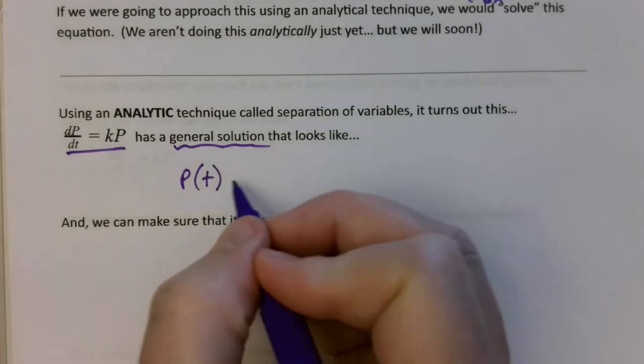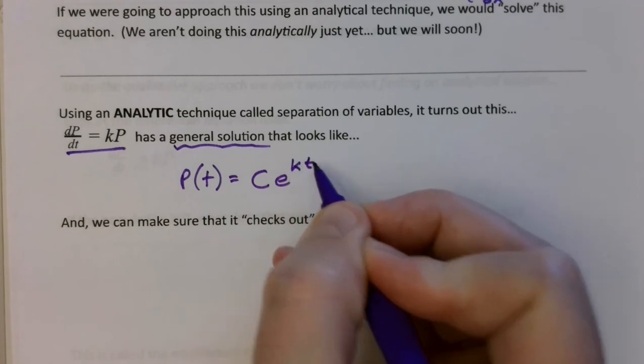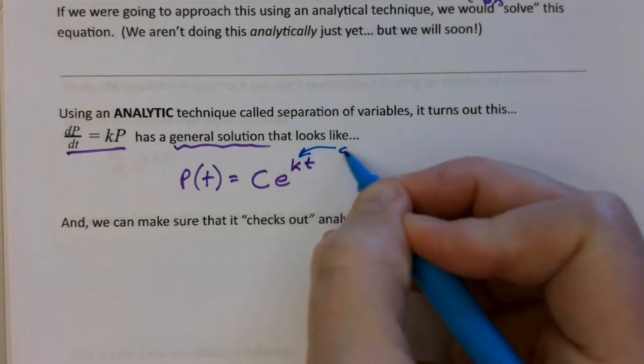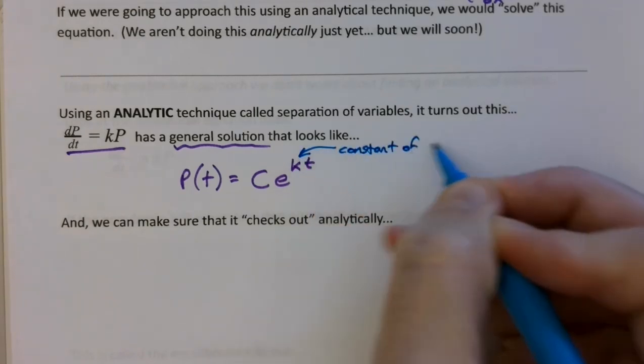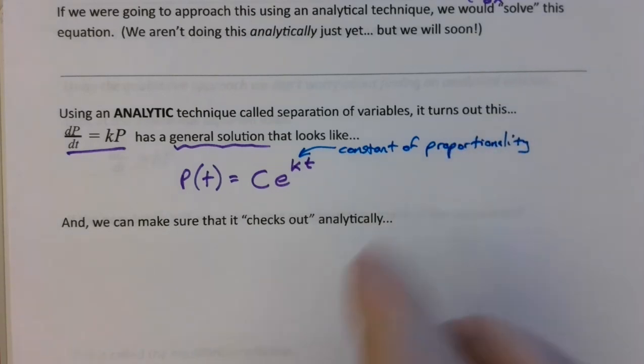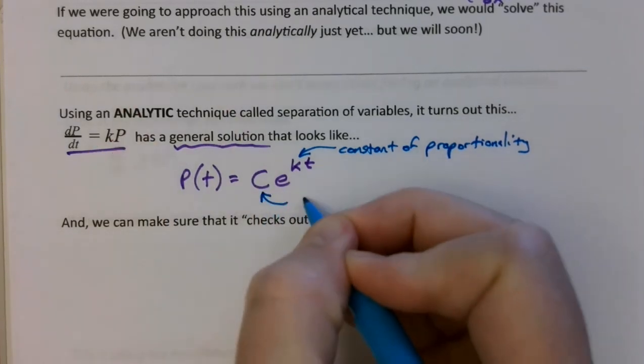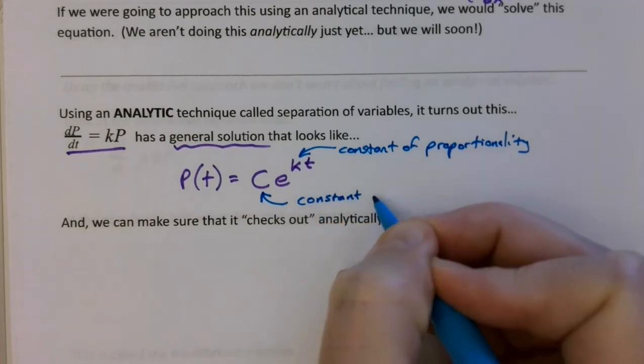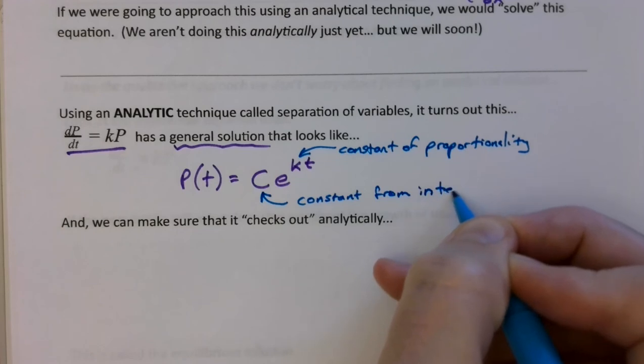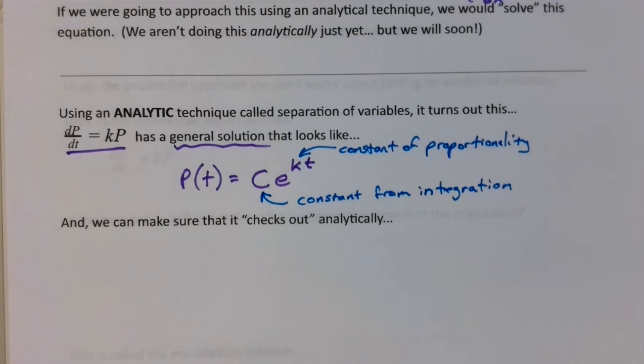P of t equals some constant times e to the power of k times t. Now if you're paying attention, you recognize that that k, that was really our constant of proportionality. And that's from the original equation. That's sitting right there. But this C right here, this is another constant, but that's a constant that comes from integration. So if you think back to Calc 1, everything was, you know, don't forget to add plus C, plus C. Well, that's where the C pops up in our solution, the integration.